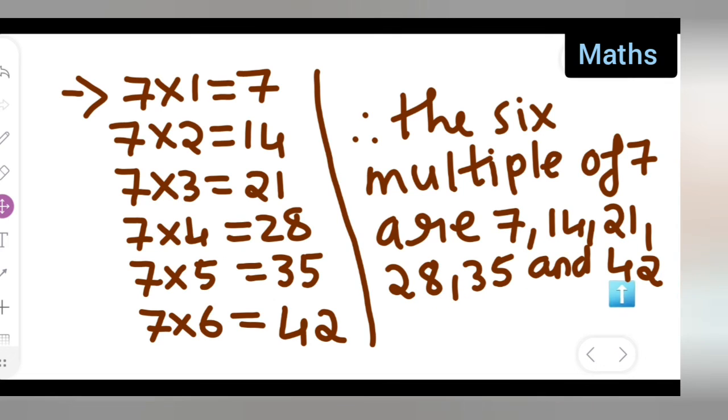1, 2, 3, 4, 5, 6. So, these are the 6 multiples of 7.